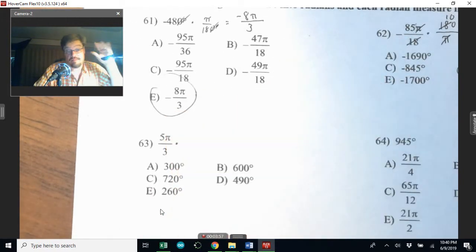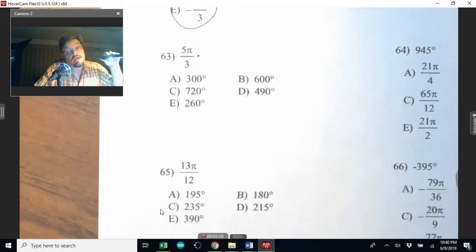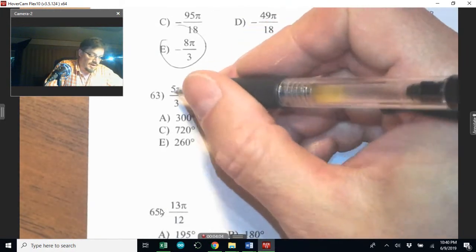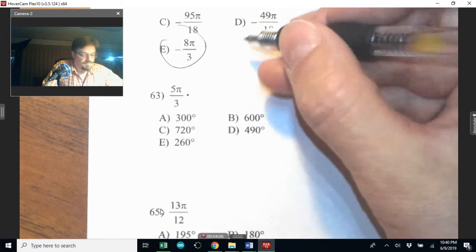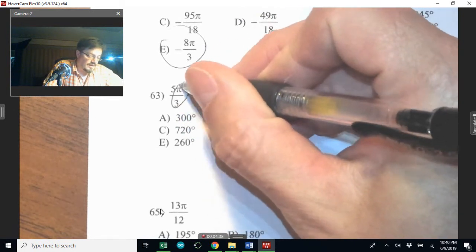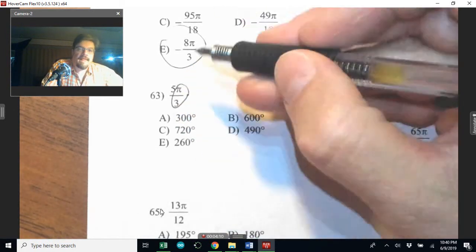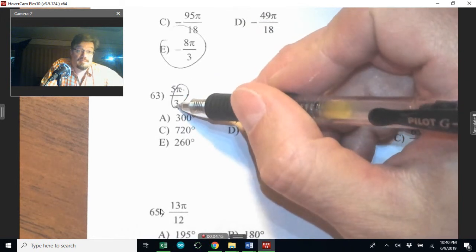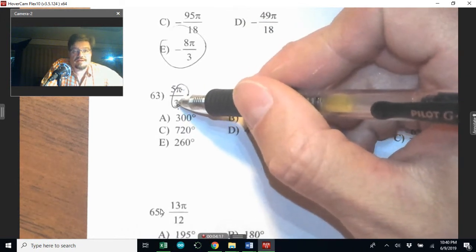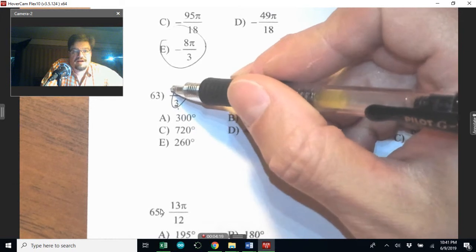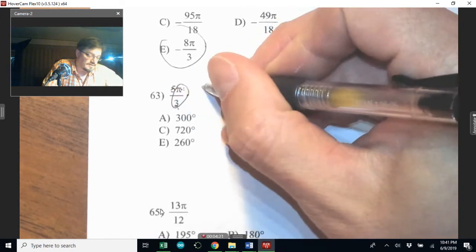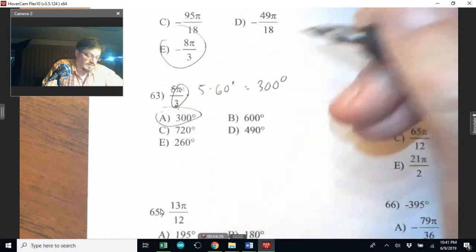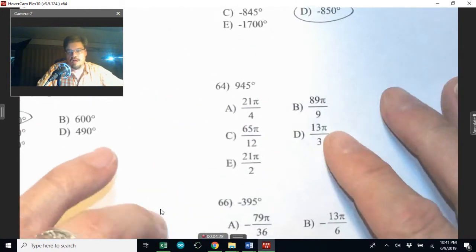So just keep going. 5 pi over 3. If you memorize your unit circle, you can quickly identify this one. One way to look at it: if I look at pi over 3, I know that that's the 60 degree family. So the 60 degree family, I have 5 of those 60 degrees. And 5 times 60 is 300.